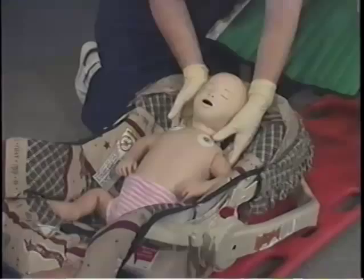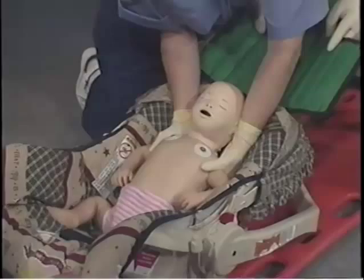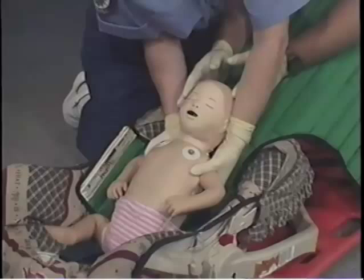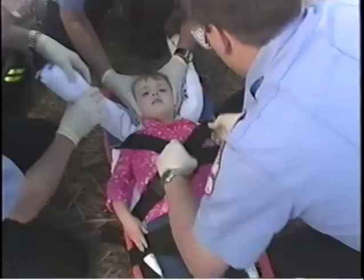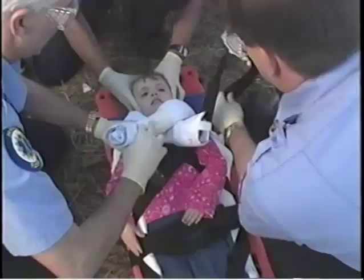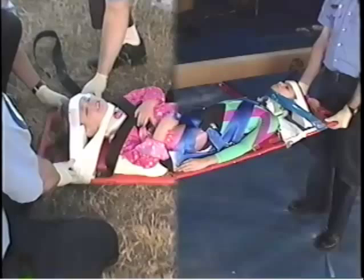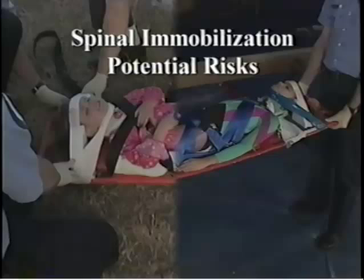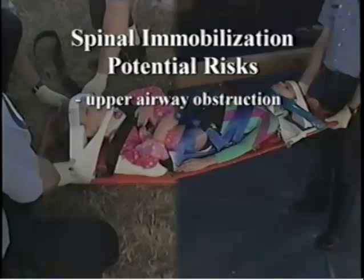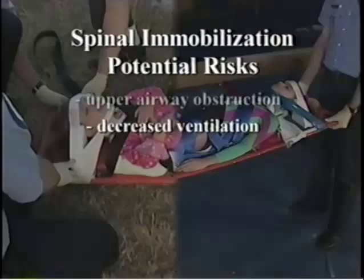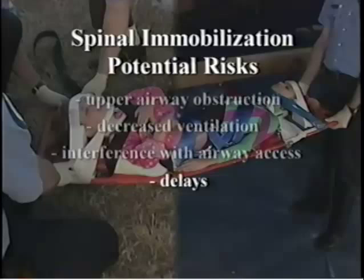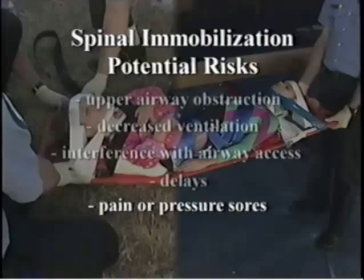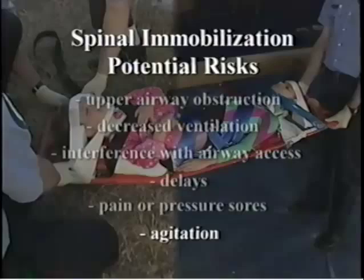Alternatively, the pediatric extrication device, or KED, is placed behind the infant's head, neck, and back to provide spinal support while the child is gently transferred out of the seat in the axial direction and onto a spine board. Although cervical stabilization with a rigid collar is desirable, towel rolls or manual immobilization are also appropriate. When considering all issues of spinal immobilization, it is important to understand the potential risks, which include upper airway obstruction due to an incorrectly sized cervical collar or adverse flexion in infants and young children, and decreased ventilation from inappropriately placed or overly tightened straps. Other potential risks, drawn from limited adult data, include interference with airway access, delays in transport or physical examination, pain or pressure sores at bony points of contact such as the occiput and lumbosacral spine, and agitation resulting in increased intracranial pressure or spinal movements despite attempts to maintain stability.